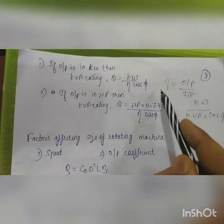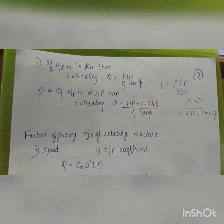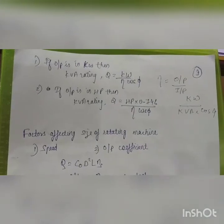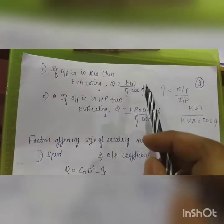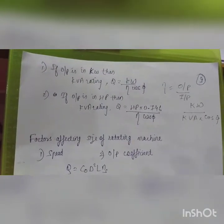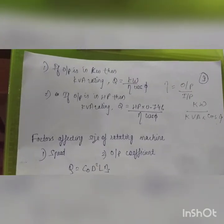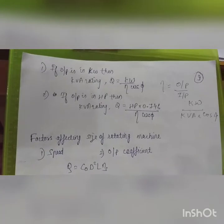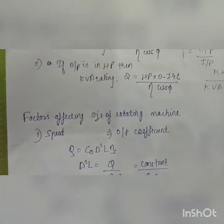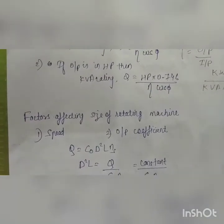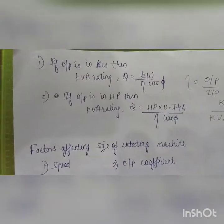Efficiency equals output power divided by input power. Since output is in kilowatts and input equals KVA times cos φ, rearranging gives Q = kW / (η · cos φ). So if output power is given you can easily calculate the KVA rating. If the output is in horsepower, first convert: multiply HP by 0.746 to get kilowatts, then apply the same formula.